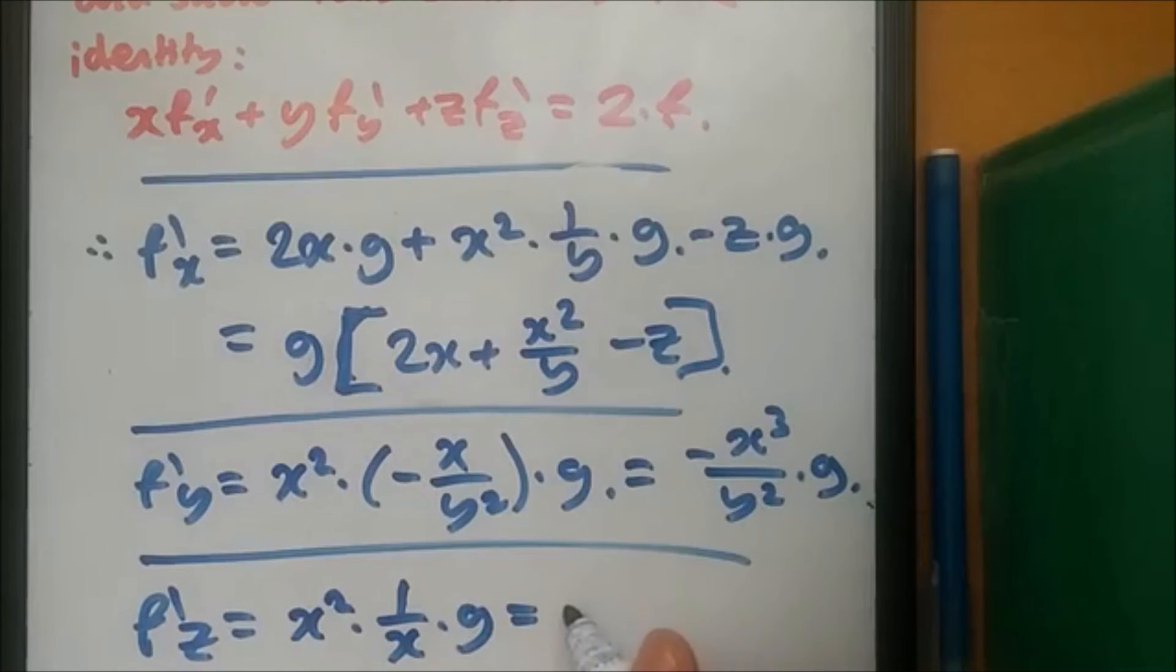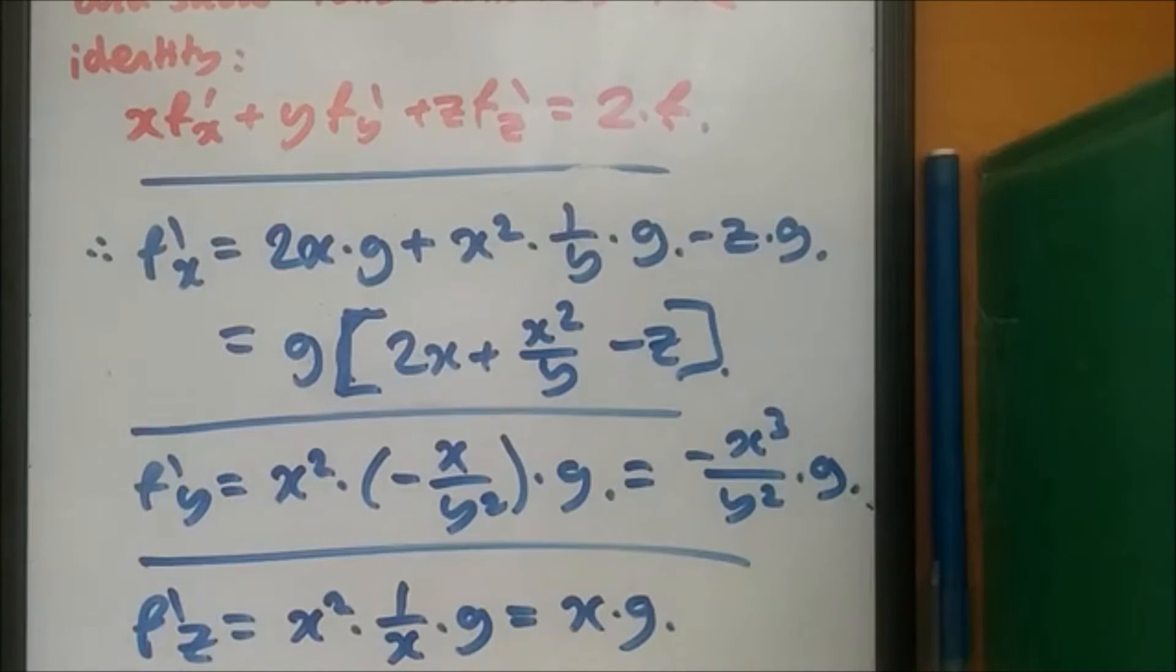So x squared times 1 over x and the g, which is just x g. That's it guys. x g.